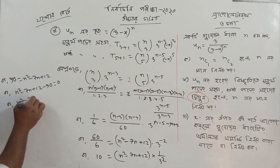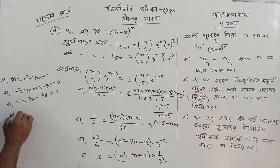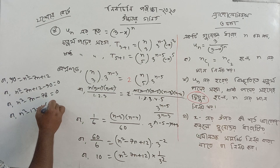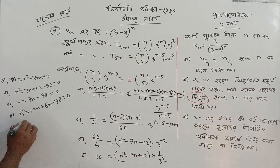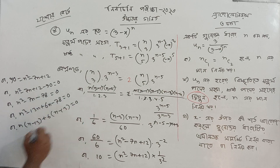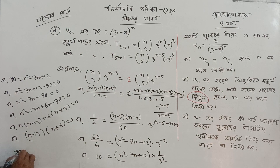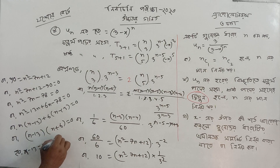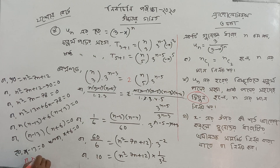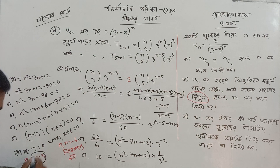This is n squared minus 7n minus 88. The middle term is 88. The term is n minus 13. n minus 13 equal to 0. n minus 13, n plus 6 equal to 0. n minus 13 equal to 0, other than n plus 6 equal to 0. Now n is equal to 13, and n is equal to minus 6.